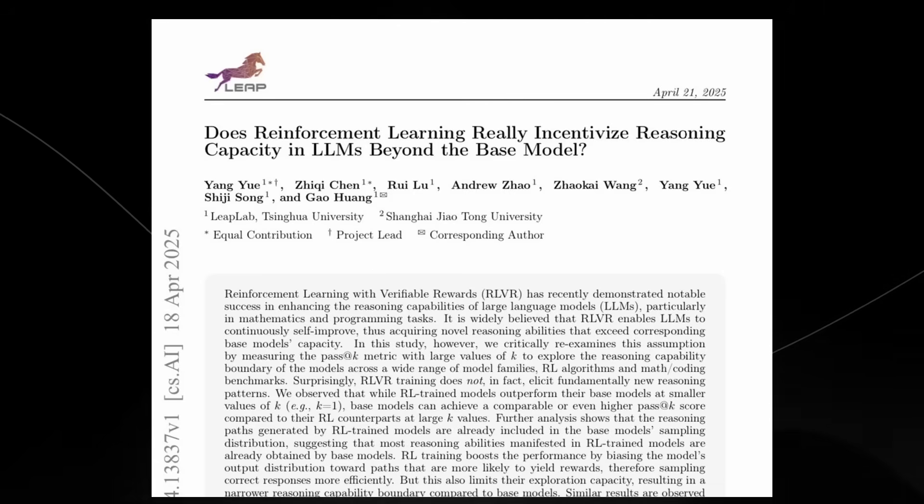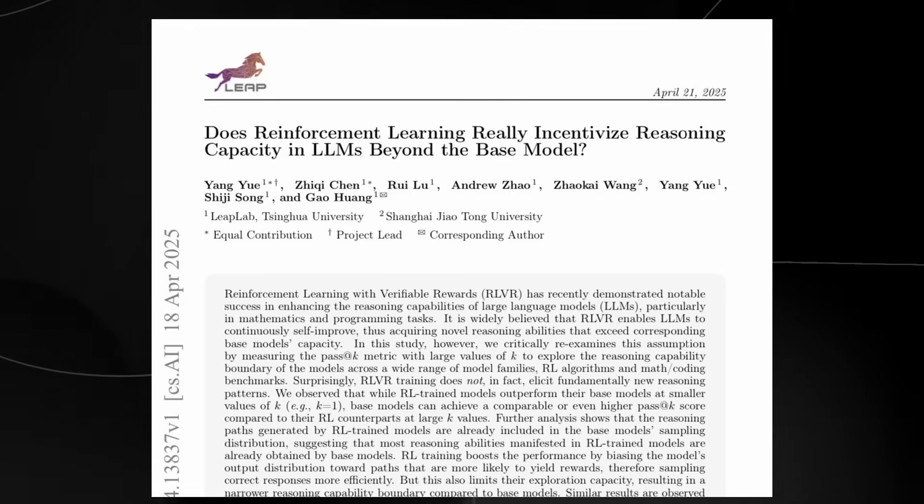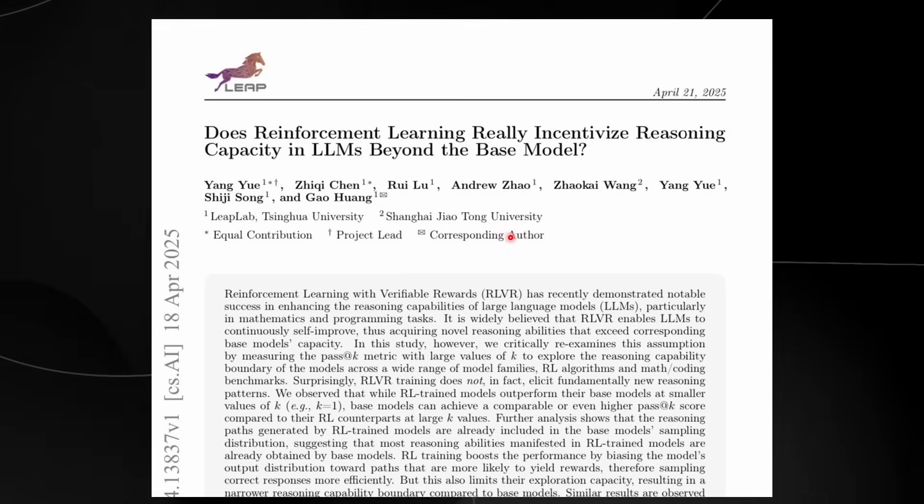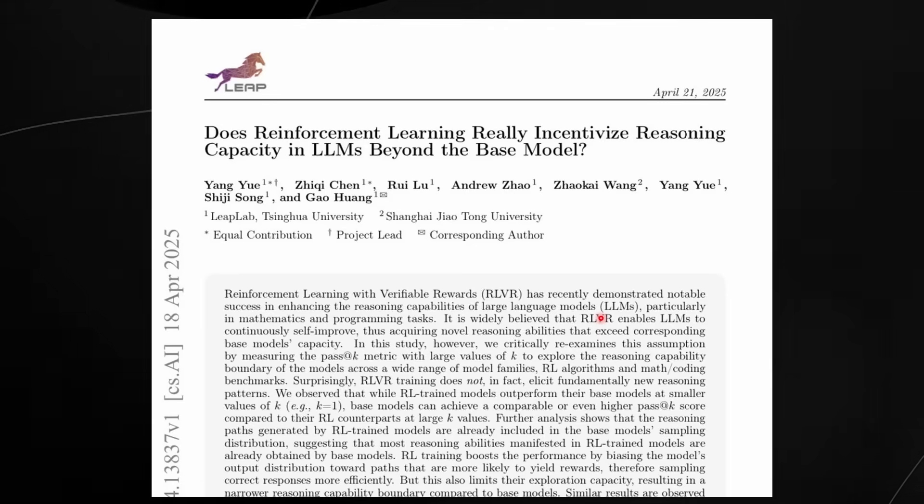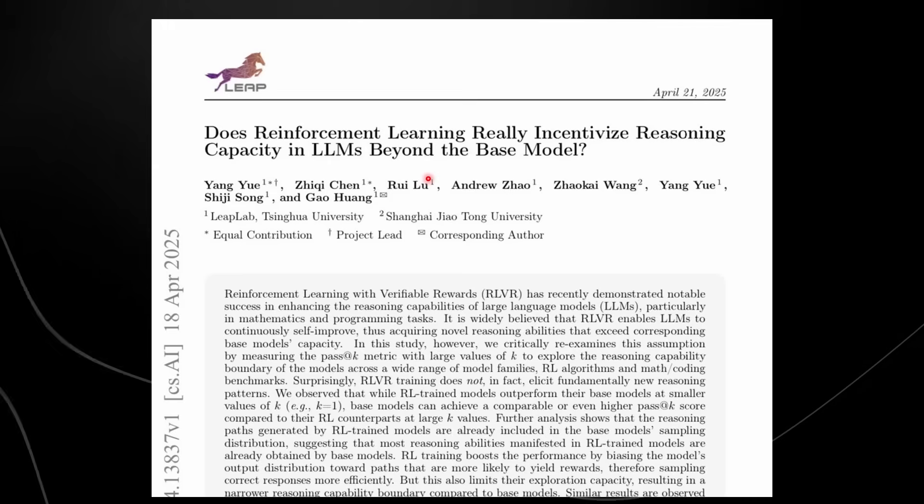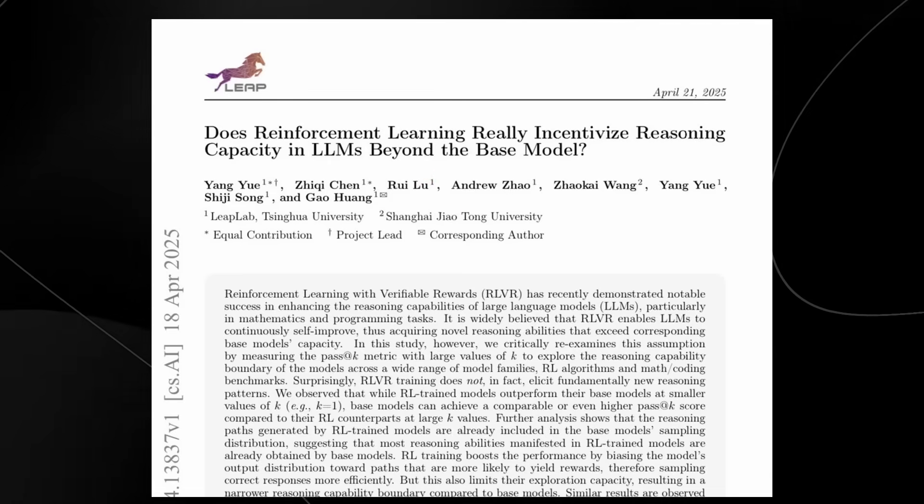This paper called 'Does reinforcement learning really incentivize reasoning capacity in LLMs beyond the base model' essentially is a paper that seeks to understand whether or not adding reinforcement learning to a model, which is how they train the model to be better at thinking and solving problems, actually makes the model smarter. And this paper, the entire thing that it says, is that this doesn't actually make the model smarter.